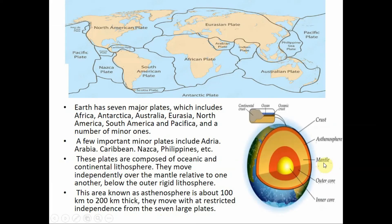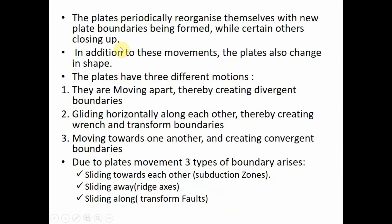The mantle has high density and is basically liquid in form, so the crust, which is solid and has lower density, floats over the mantle. Therefore the plates periodically reorganize themselves, with new plate boundaries being formed while certain others close up. In addition to these movements, the plates also change in shape. There are three types of plate motion: moving apart, creating divergent boundaries; gliding horizontally along each other, creating wrench and transform boundaries; and moving towards one another, creating convergent boundaries. Due to plate movement, sliding towards each other creates subduction zones, sliding away creates rift axes, and sliding along creates transform faults.